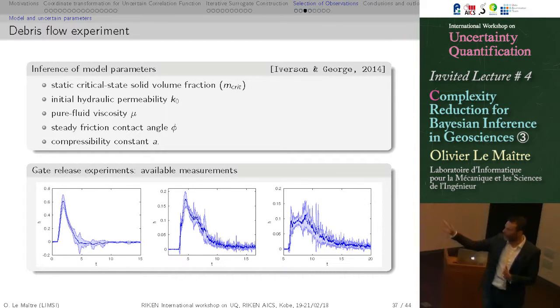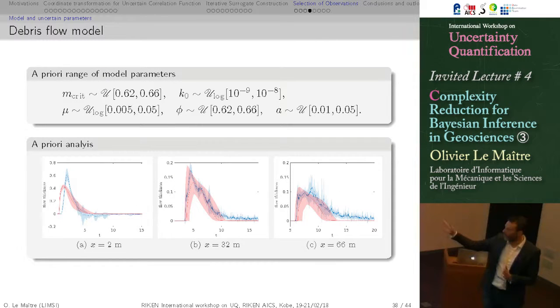So what can you do with that? Well, you can run the model with different values of the parameters, get a prediction for the signals, and compare to the measurements. This is the straightforward way to proceed. But the first thing you have to decide is the a priori range of this parameter. And this is already a big issue. Actually, we spend, I don't know, maybe six or eight months to fix this a priori range.